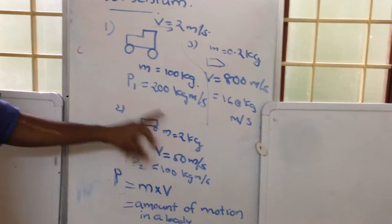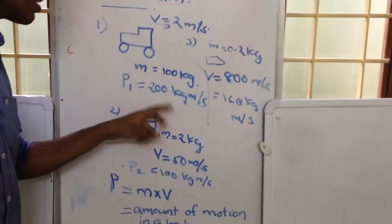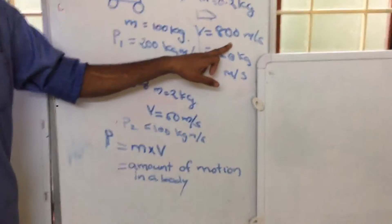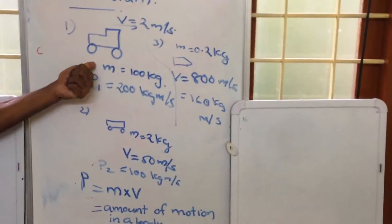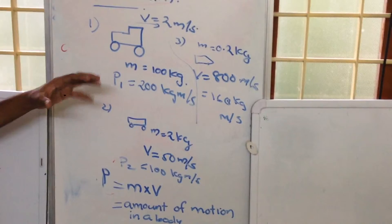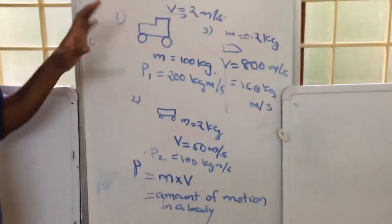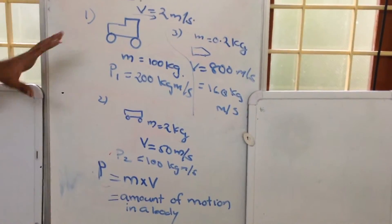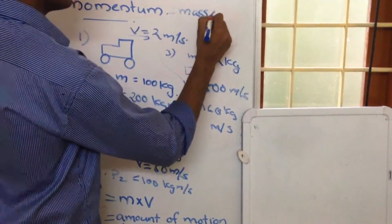So the amount of motion in this truck is the greatest. But notice: the velocity of the truck is very small while the velocity of the bullet is very large at 800 m per second, but even then the amount of motion in the truck is greater. In order to obtain the amount of motion, we have to look at both mass and velocity — velocity alone cannot define the amount of motion in a particular object. So in order to find the amount of motion, we use momentum, which is equal to mass into velocity.